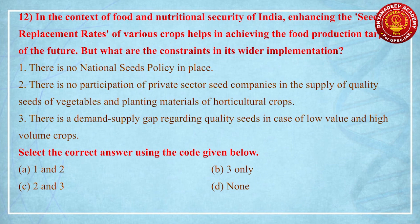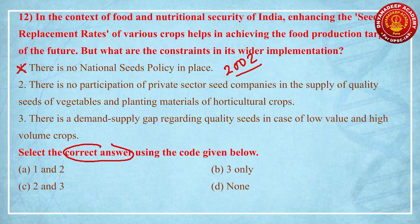First option: there is no national seed policy in place — that is wrong. We have a national seed policy formulated in the year 2002, so first option is wrong and option A is eliminated. Second option: there is no participation of private sector seed companies in the supply of quality seeds — this is also wrong, because many private sector companies are involved in seed production and the seed sector has been deregulated and privatized. So second option is also wrong, eliminating options with statements 2 and 3 combined. The correct option remains statement 3.